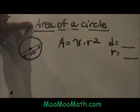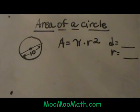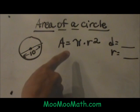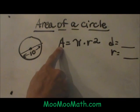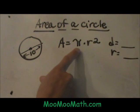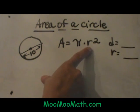Hi, welcome to MooMooMath. Today we are going to look at how to find the area of a circle. First of all, you need to know your formula. The area of a circle is equal to pi times the radius squared.